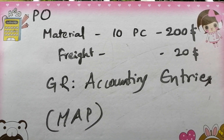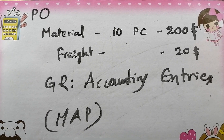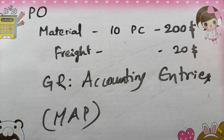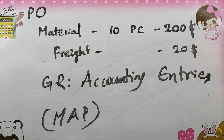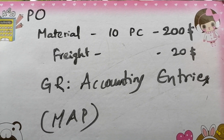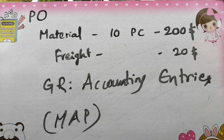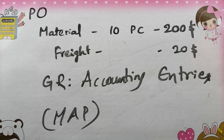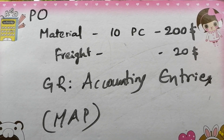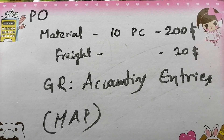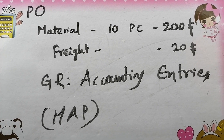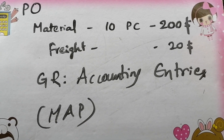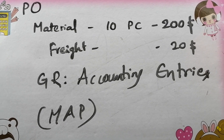One PO is created with a quantity of 10 pieces and a total price of 200 dollars — so 10 pieces, total price is 200, each piece is 20 dollars. And also there is a freight charge of 20 dollars.